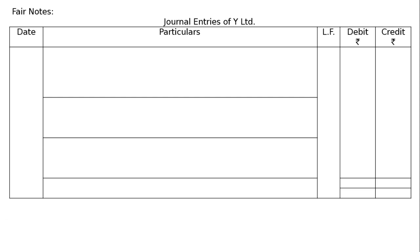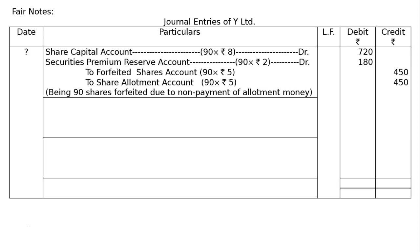Journal Entries of While Limited. First entry — forfeiture: Share Capital Account debited for 90 shares at ₹8 called up (application and allotment excluding premium: ₹5 + ₹3 = ₹8), that is 90×8 = ₹720. Securities Premium Reserve Account debited — premium not collected along with allotment, shown separately as 90×₹2 = ₹180.